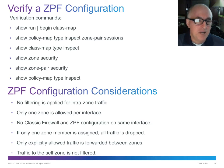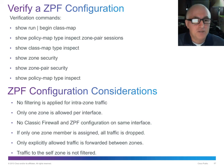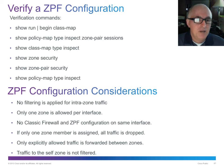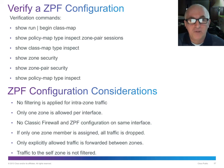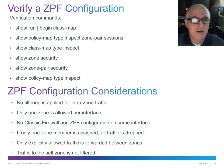Some key considerations: only one zone is allowed per interface — though with sub-interfaces you could assign different zones to different sub-interfaces. Also, no filtering happens intra-zone. Even if you have two different ports — say G0/0 and G0/1 — but they're both in zone private, no filtering will apply. Firewalls don't filter within a zone; it's only from zone to zone.